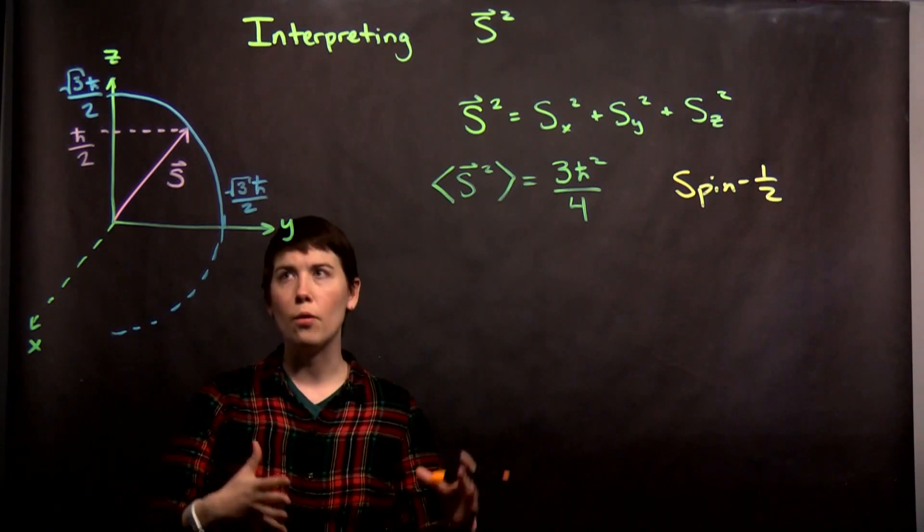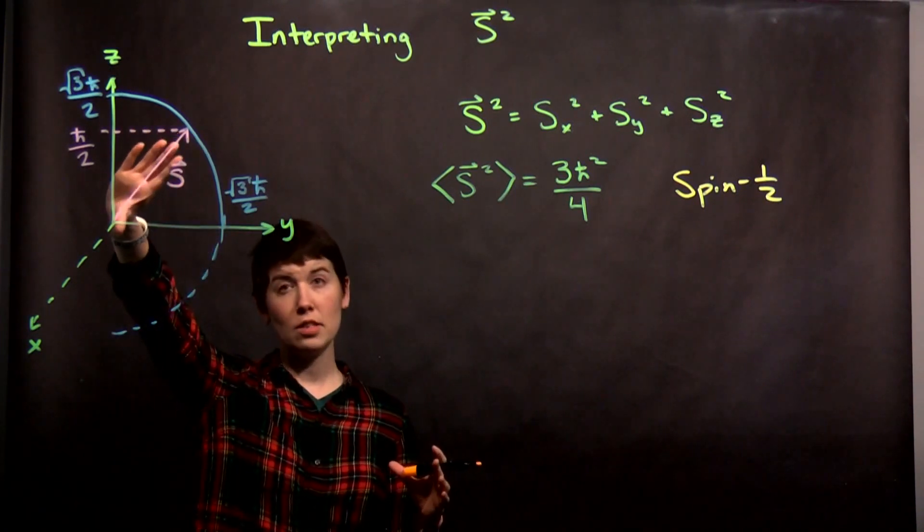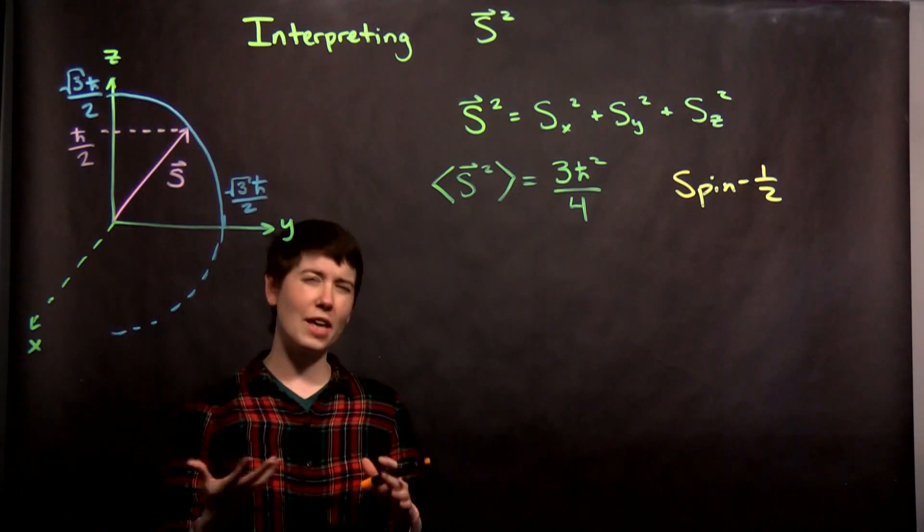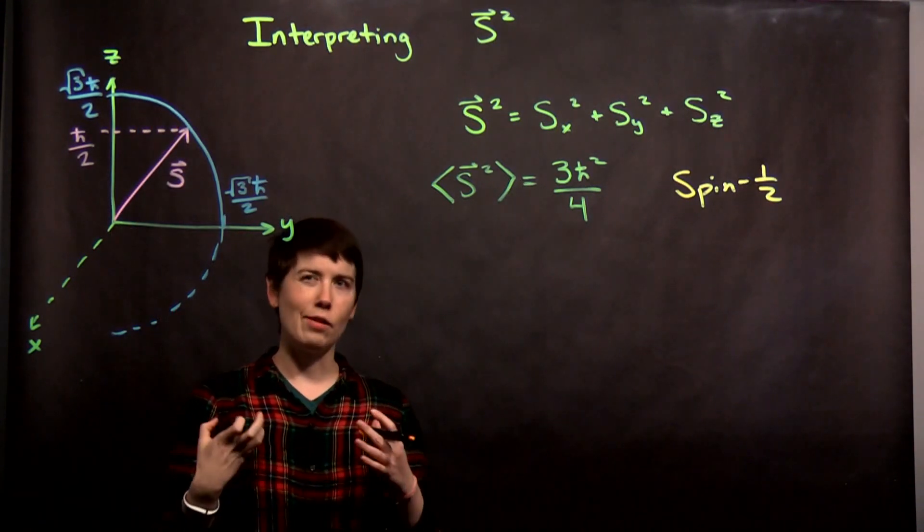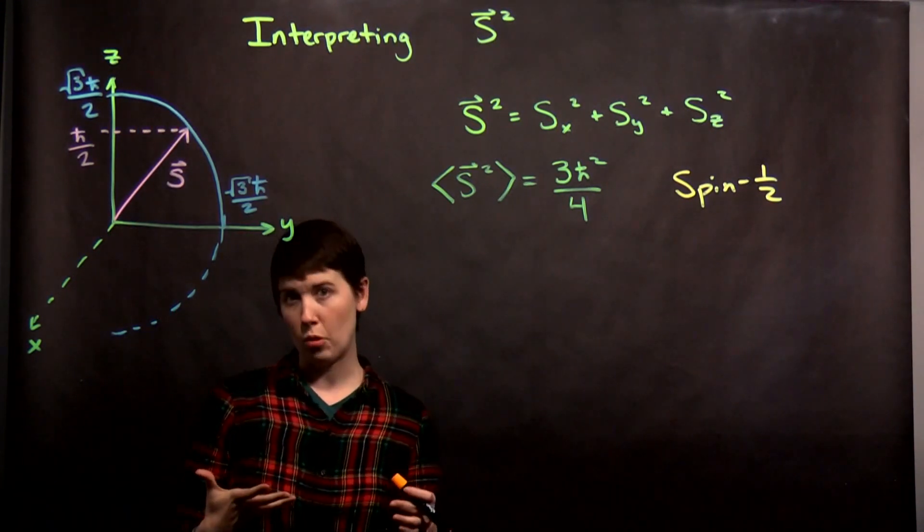That because we know how long this vector is exactly, we can't actually know exactly which direction it's pointing in.